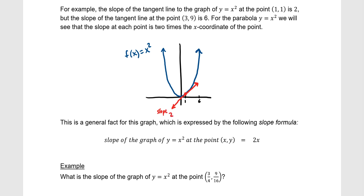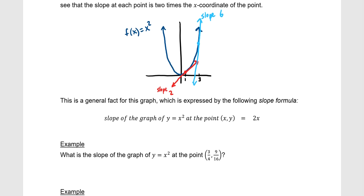The slope of the tangent line at the point (3, 9) is 6 — note that should be a 3 on the axis, not 6. So the tangent line at (3, 9) would look something like that and that slope would be 6. The slopes of tangent lines are different on this parabola depending on where we are on the curve. For y = x², the slope at each point is 2 times the x-coordinate of the point. So the slope formula for y = x² is slope = 2x.